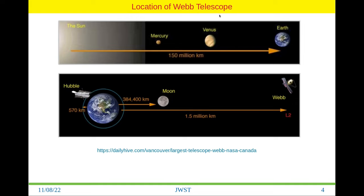Now the location of the James Webb Telescope. The distance from the Sun to the Earth is around 150 million kilometers. The James Webb Telescope lies around the L2 point, which is basically 1.5 million kilometers away from the Earth — about 100 times smaller than the Earth-Sun distance. However, Hubble basically works around 570 kilometers from the Earth, but James Webb is 1.5 million kilometers apart from the Earth's surface.